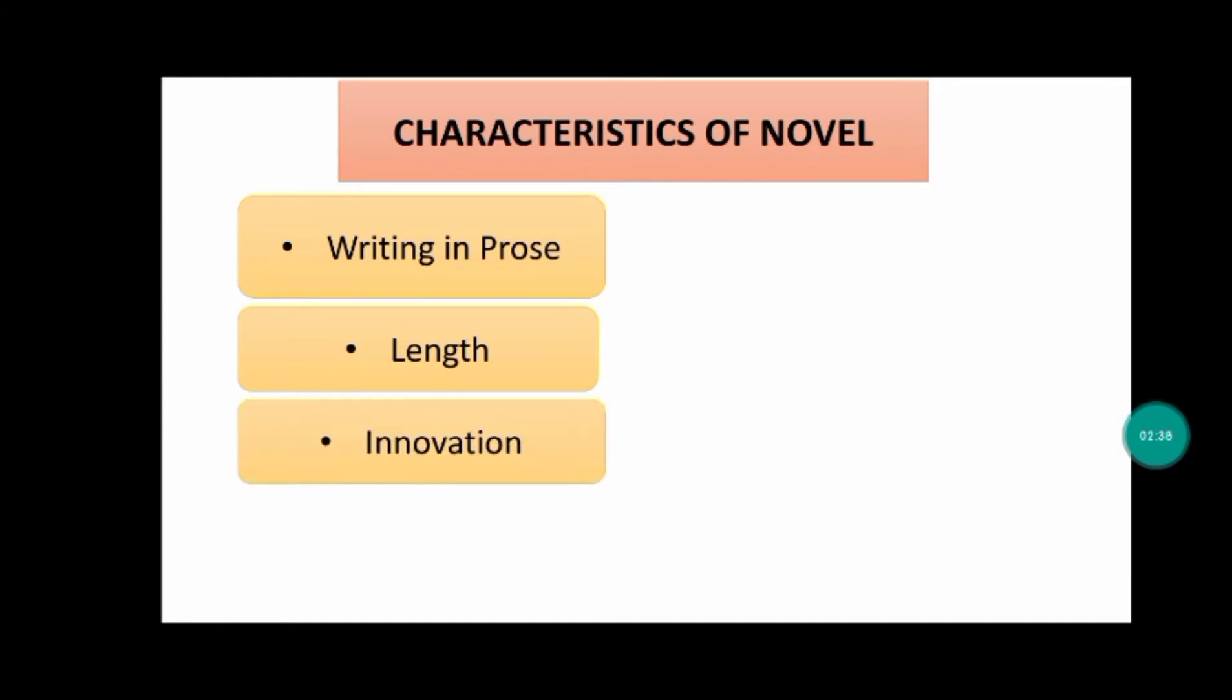Number three is innovation. There is no rule that determines this characteristic. However, throughout the history of humanity, novels have been representatives of innovation. That is to say, through them, the transit has been made to new ways of doing literature.